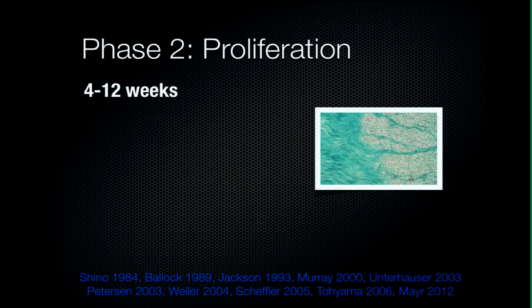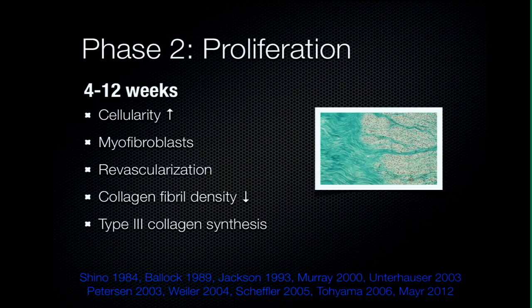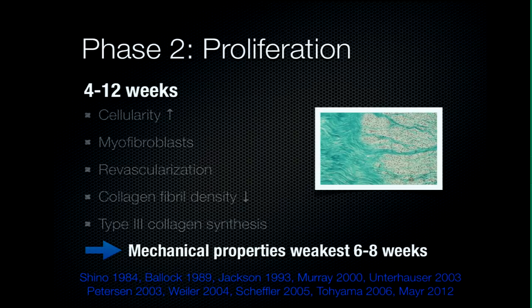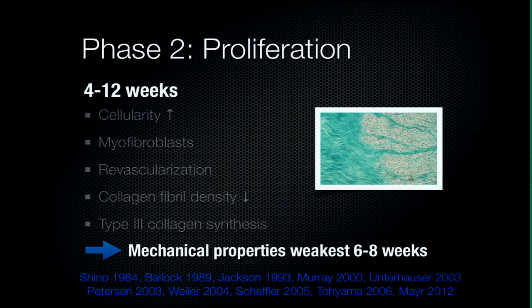The second phase is the most active phase of remodeling: proliferation. This occurs between four and twelve weeks after reconstruction in animals. There is a lot of cellular activity; myofibroblasts appear — specific fibroblasts for the remodeling process — important for creating the in-situ tension necessary for the later ligamentization phase. Revascularization occurs from the periphery to the center of the graft, collagen fiber density decreases, and there is type 3 collagen synthesis. Collagen type 3 is weaker than type 1, leading to the graft being at its weakest mechanical point at six to eight weeks. This animal data has been translated into protocols used on humans — but is it also valid in humans?